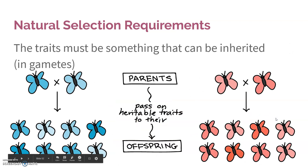Two, those traits must be something that can be inherited, so it has to be in gametes. If it's something that happened to a body cell, that's not something that can be passed on. If you chop off your ear, you're not going to have one-eared children. That's just not how that works.